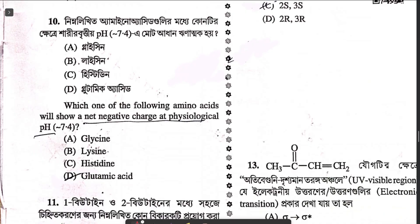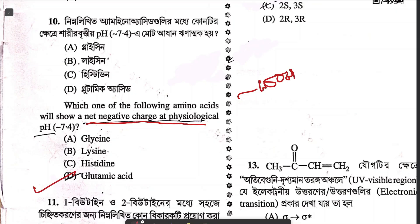Question ten asks which amino acid shows a net negative charge at pH 4.0. Net negative charge means the amino acid must contain more than one acidic group, i.e., more than one carboxyl group. The only possible answer is glutamic acid, because lysine and histidine are basic amino acids and glycine is neutral.